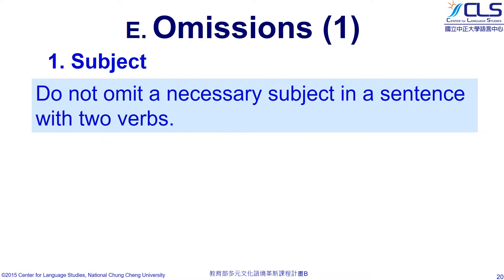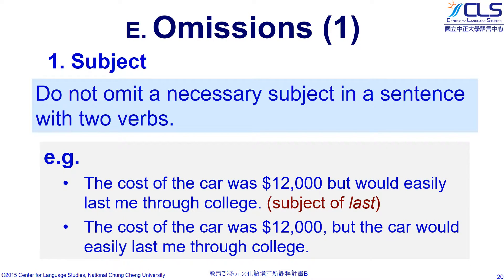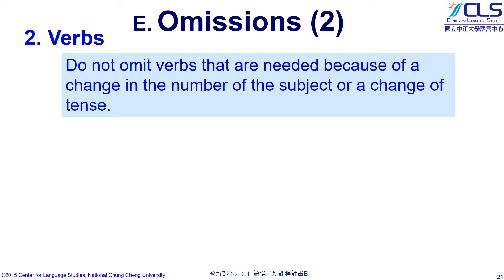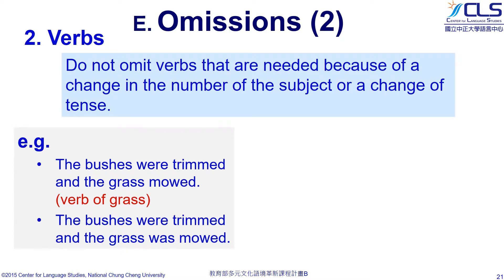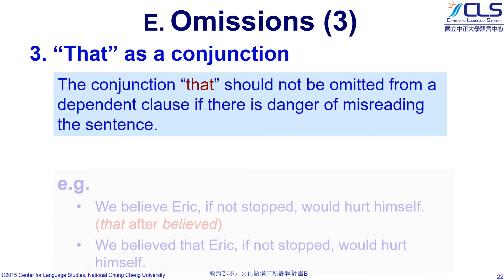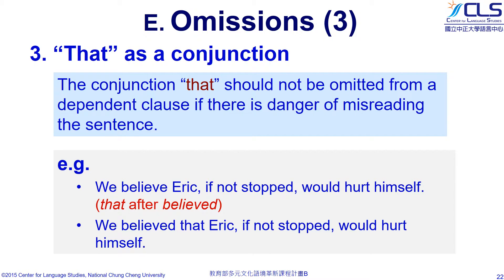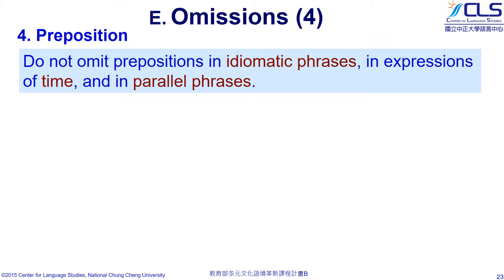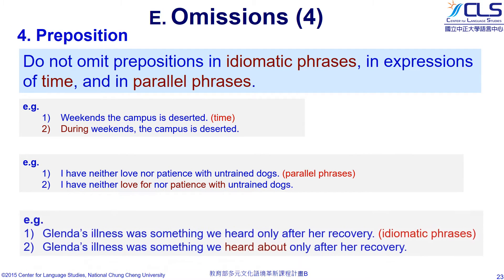Please be aware of omissions. First, do not omit a necessary subject in a sentence with two verbs. For example, when talking about the cost and duration of a car, we need to give the subject — the car — to both clauses so that readers can understand we are talking about two qualities at the same time. Second, verbs: do not omit verbs that are needed because of a change in number of the subject or a change of tense. Sometimes we use 'that' as a conjunction; if there is a dependent clause going after it, 'that' should not be omitted if there is danger of misleading the sentence. And watch the prepositions: if we are writing sentences that include idiomatic, time, and parallel phrases, these phrases should always go after a preposition.